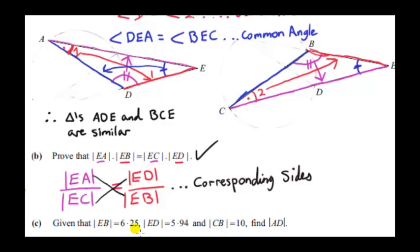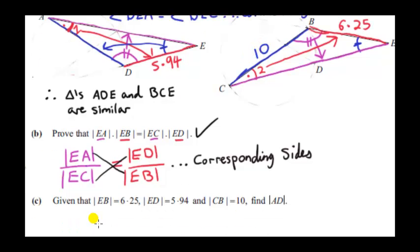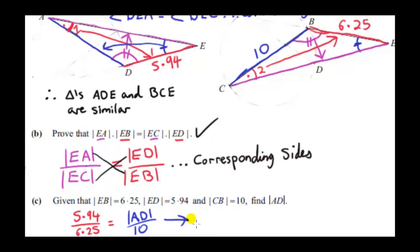We are given that EB is 6.25, ED is 5.94, and CB is 10. We want to find AD. Using the ratio of corresponding sides: 5.94 divided by its corresponding side 6.25 must equal AD divided by its corresponding side 10. To find AD, we multiply both sides by 10, giving AD equals 9.504.